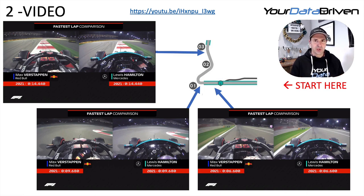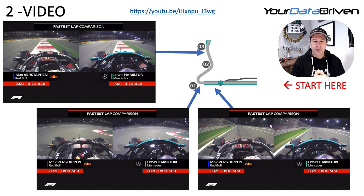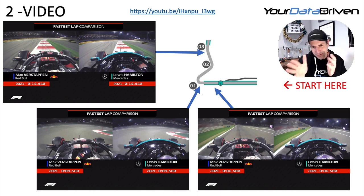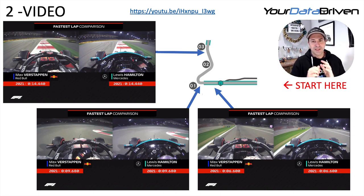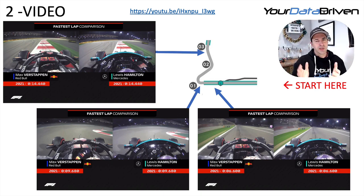Coming into turn one, they're both turning the wheel. Max appears to have a little more steering lock, but the wheel angles are pretty much the same. From the driver's eye view, your eyes are drawn to the apex. They're basically the same at this point, which is quite important because this is a key corner — from here it's pretty much an acceleration zone through turns two and three. They both hooked it up really well.